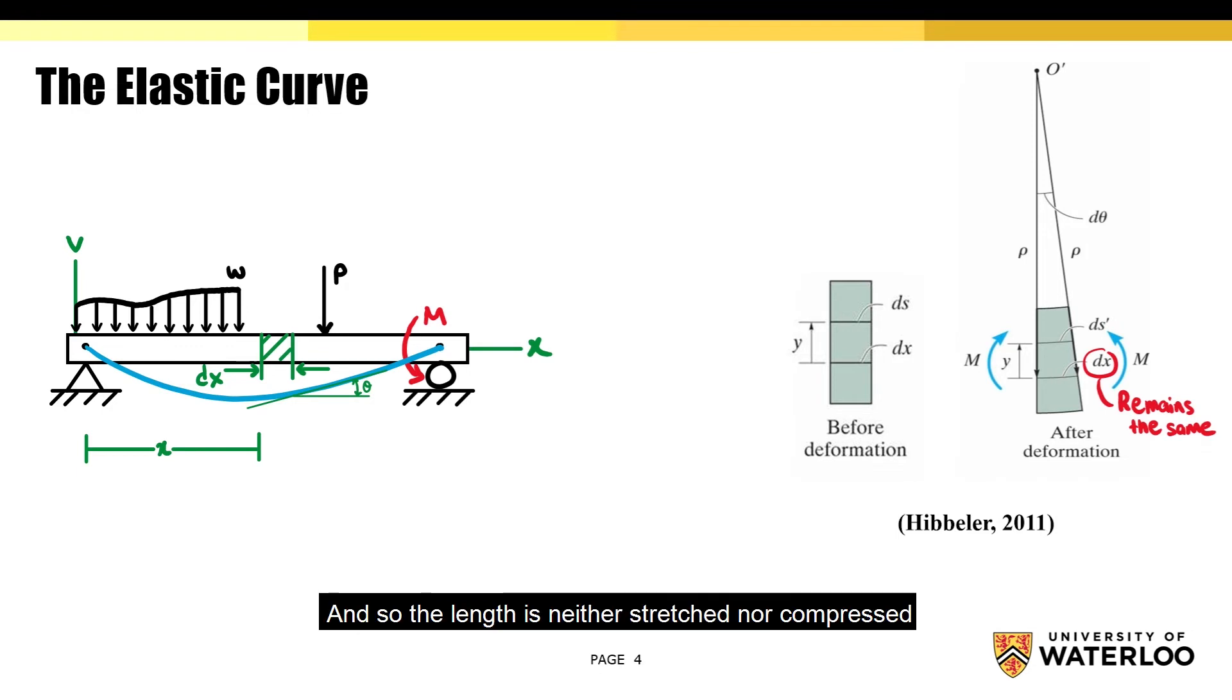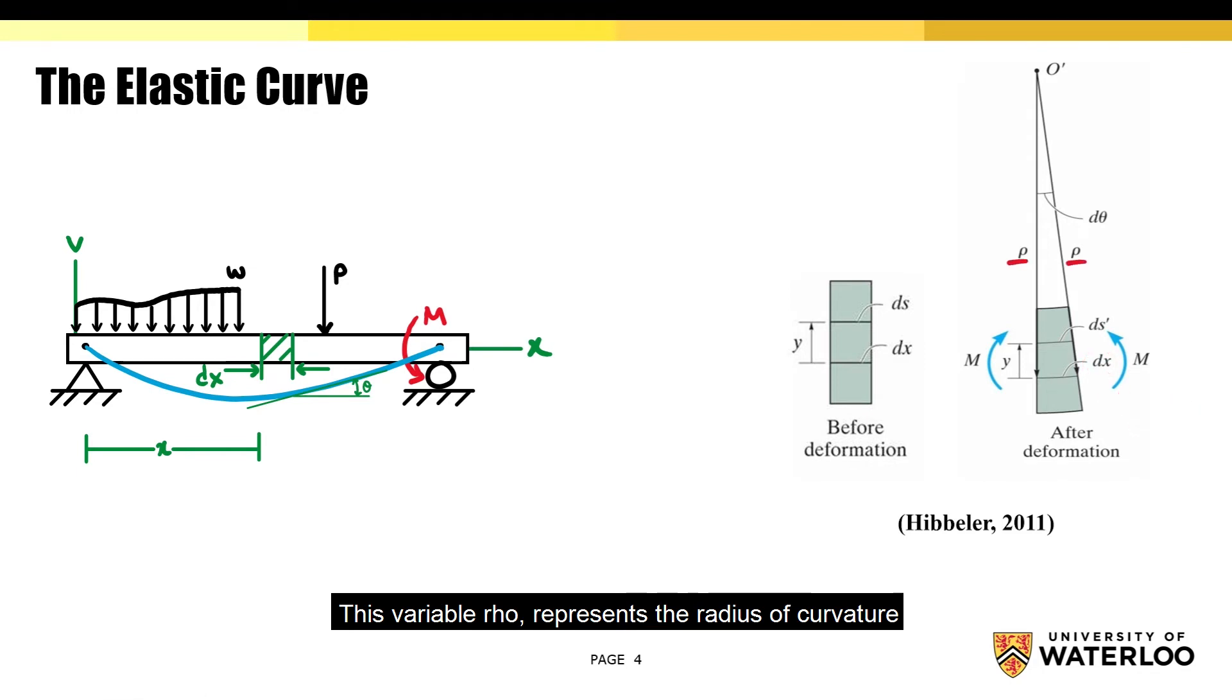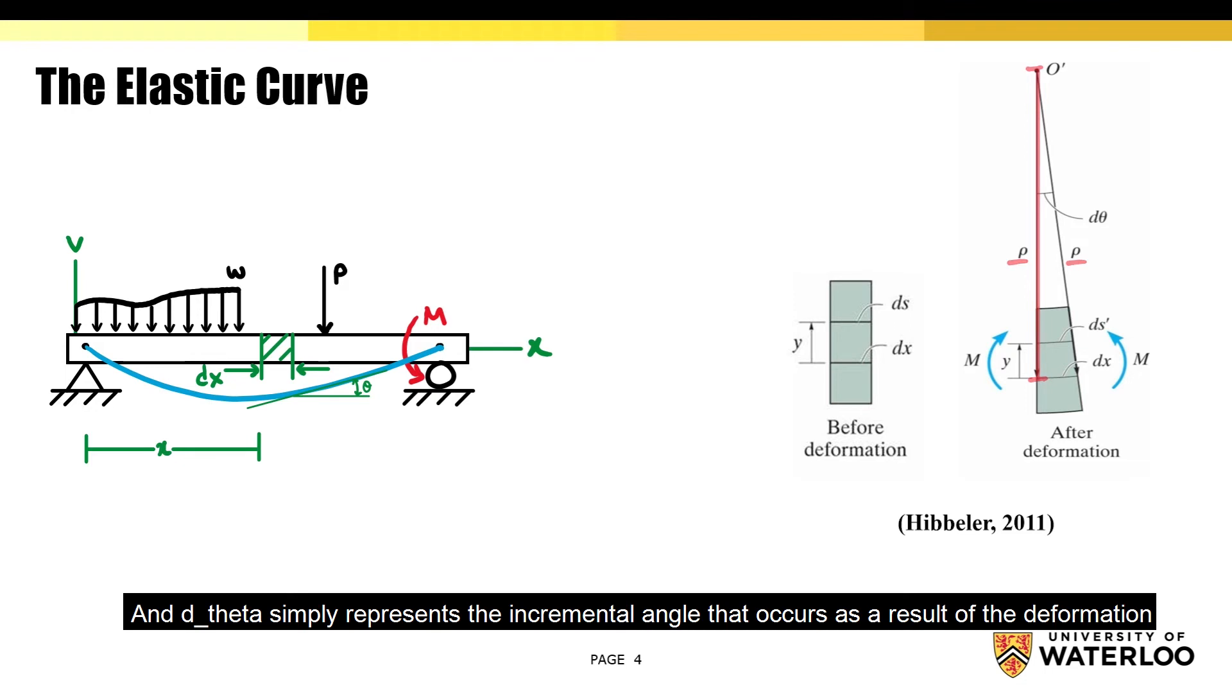This variable ρ represents the radius of curvature. It occurs as a result of the deformation, and it occurs from point O up until dx. And dθ simply represents the incremental angle that occurs as a result of the deformation.